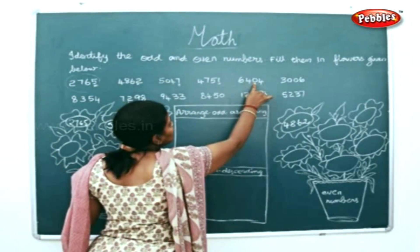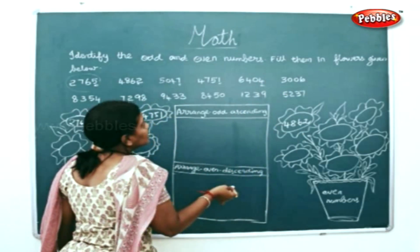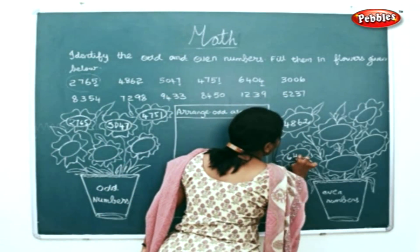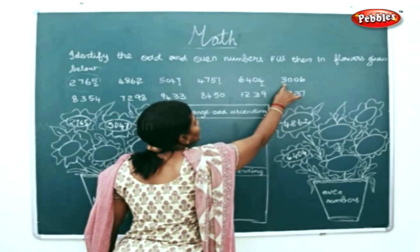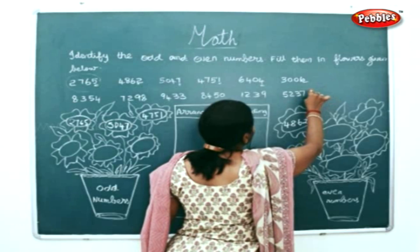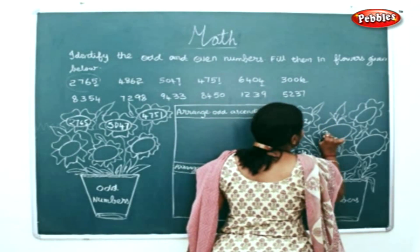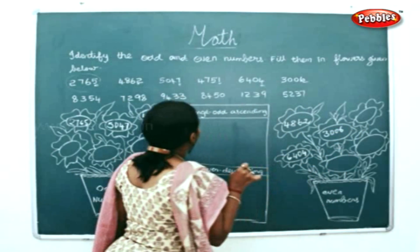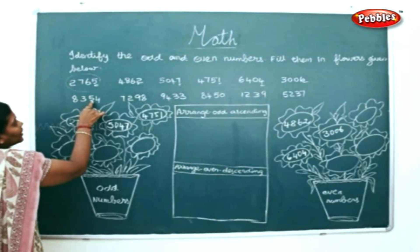Next, 6404 — 4 is an even number, so I'll write it in the even numbers place: 6404. Next, 3006 — 6 is an even number, so I'll write this number also in the even numbers place: 3006.